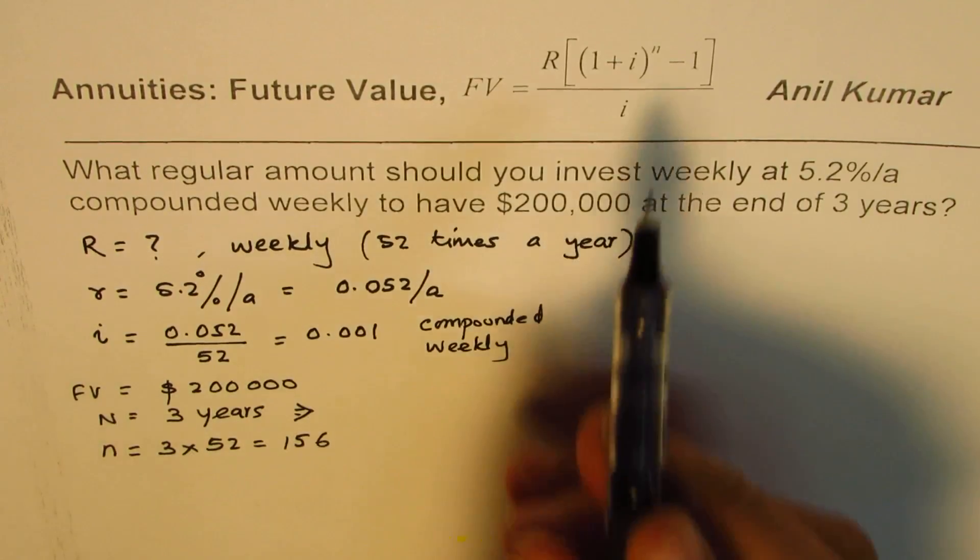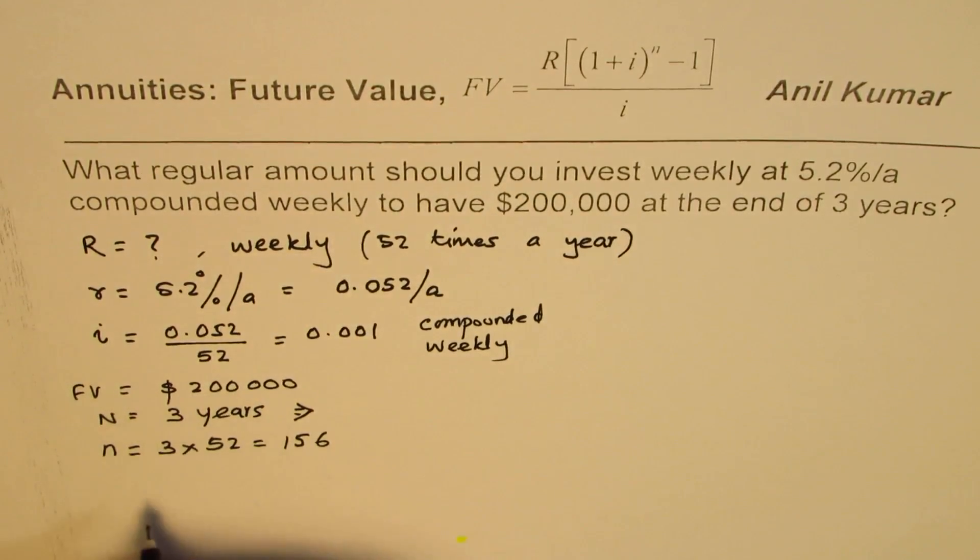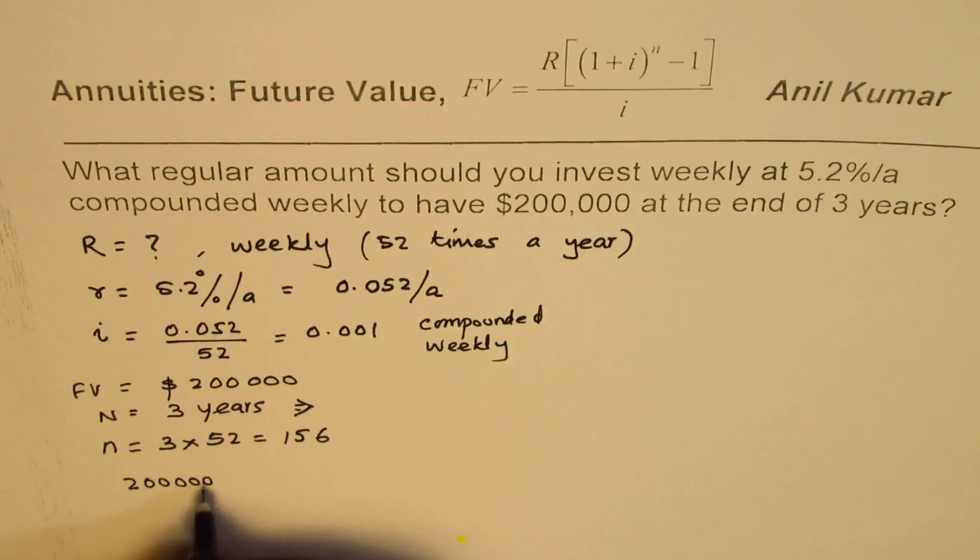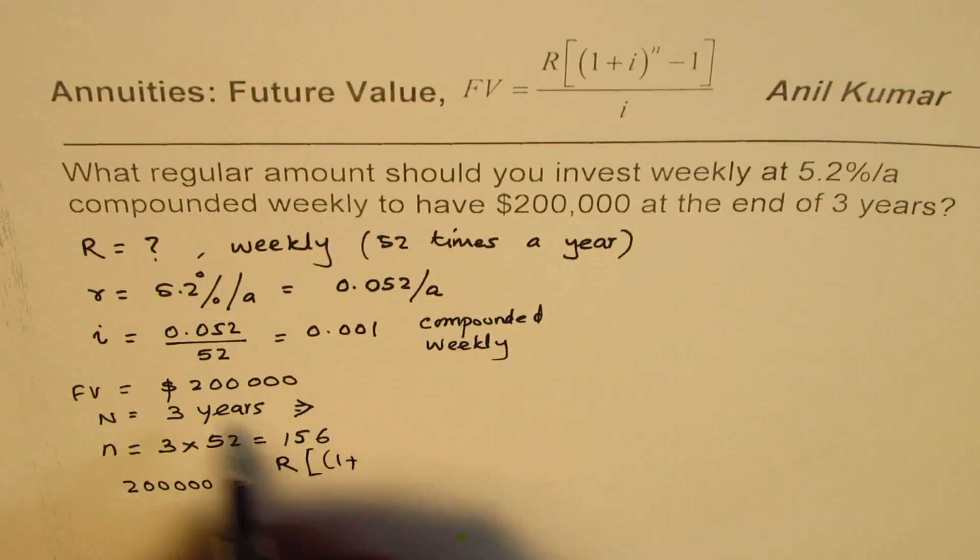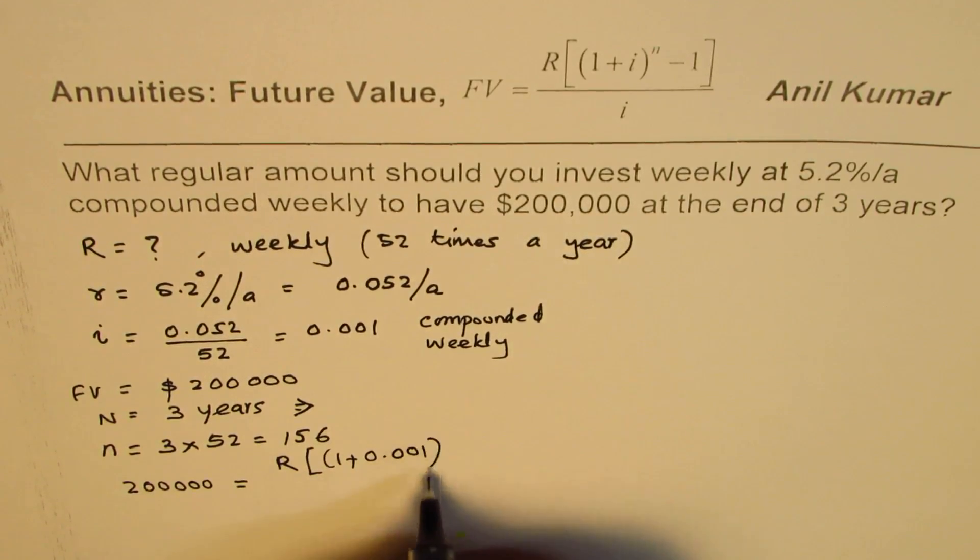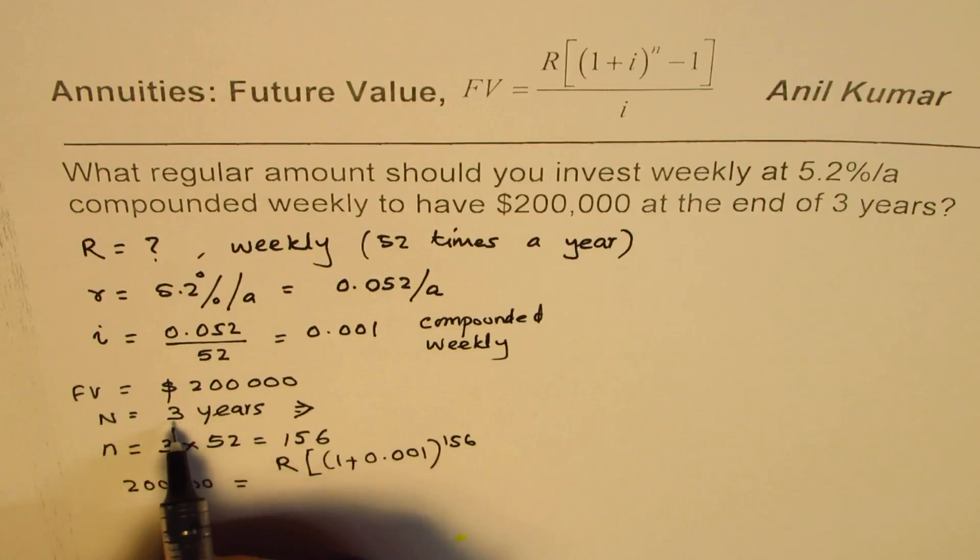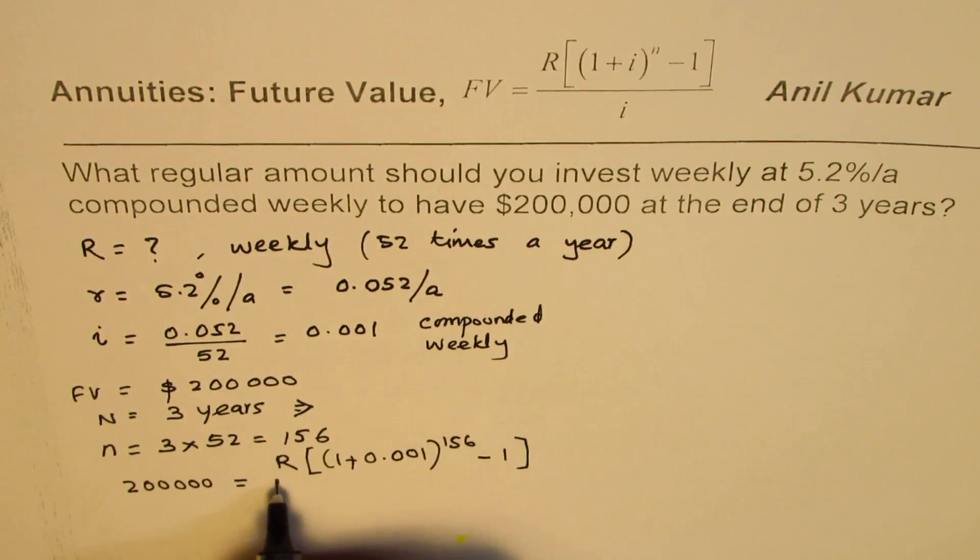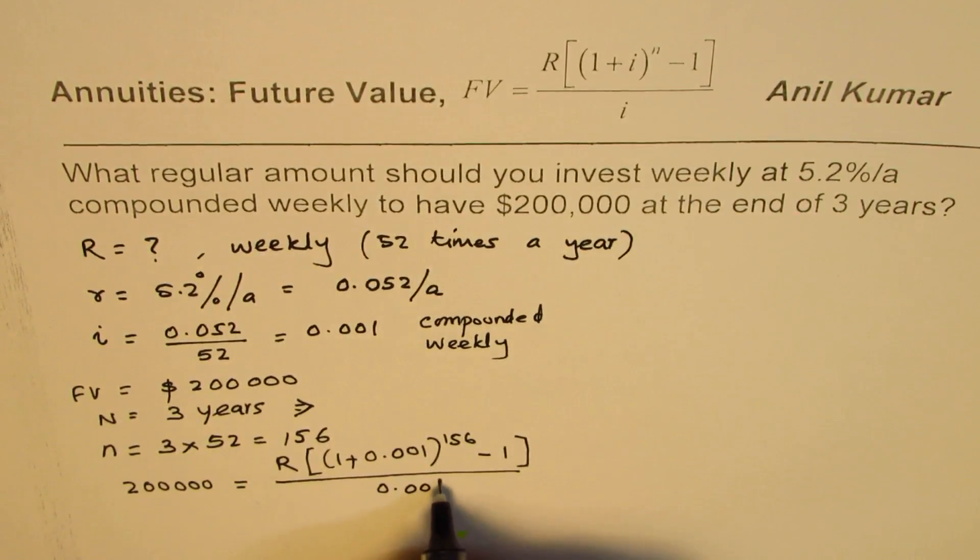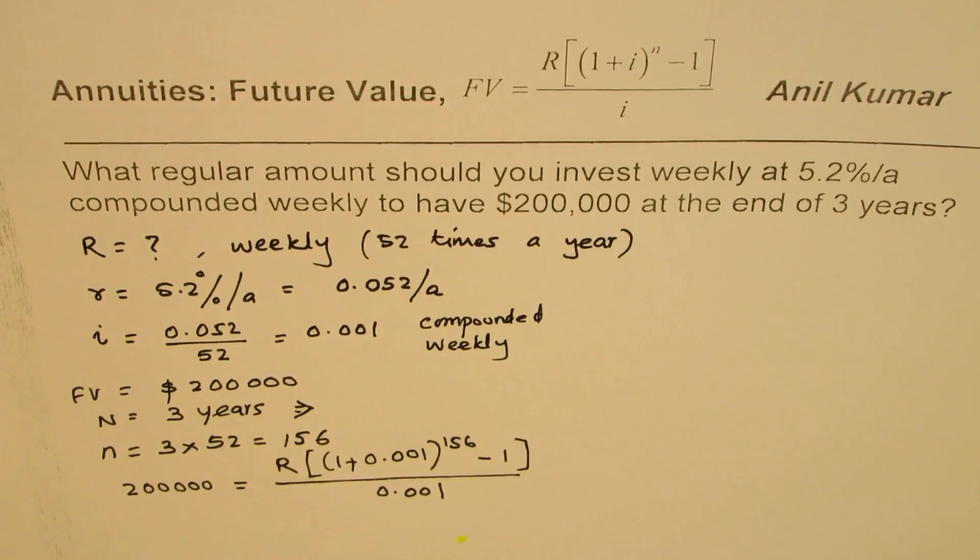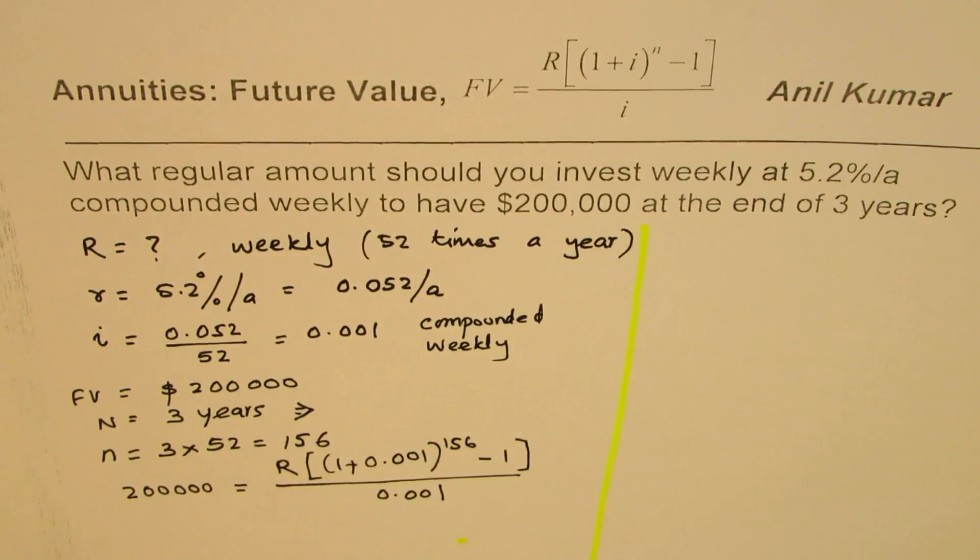And now you have to place these values in this formula to find R. So let me do that for you. Future value 200,000. So let 200,000 equals R, we need to find out, 1 plus I, which is 0.001 to the power of N, which is 156, 52 times 3 minus 1 divided by compounding period interest, which is 0.001. So now you need to calculate R from this. You can use your calculator, do the calculation, and then check with my solution.